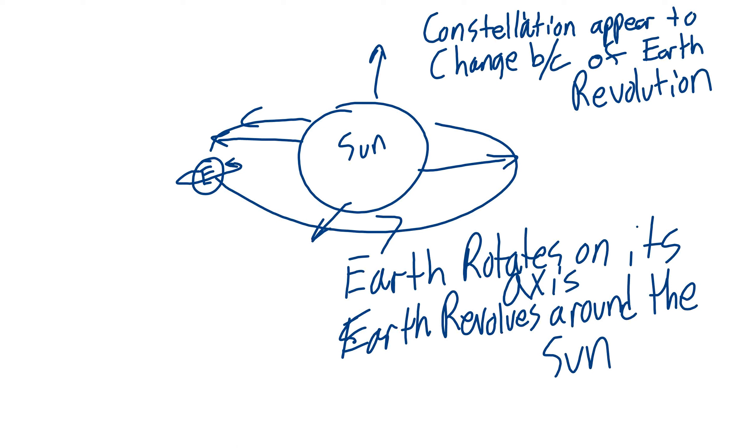Earth revolves around the Sun. So imagine you're in that office chair and you're chasing your brother around the classroom. That would be revolving. You're going around something.